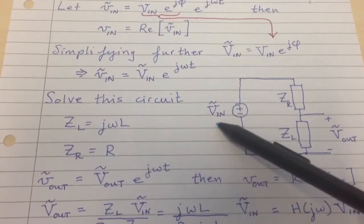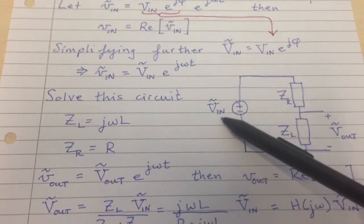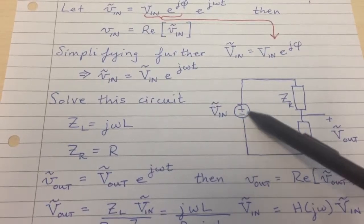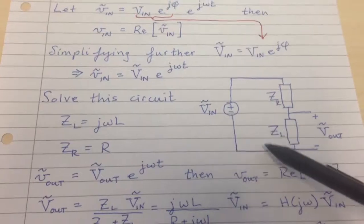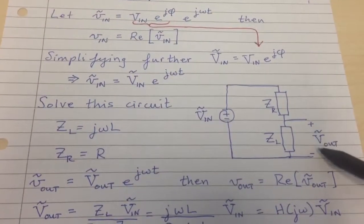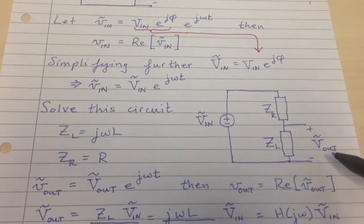So that allows us to just solve for this relatively simple circuit. We take a DC source with complex voltage, capital V_in tilde, and then we try to find the DC output voltage, capital V_out tilde.